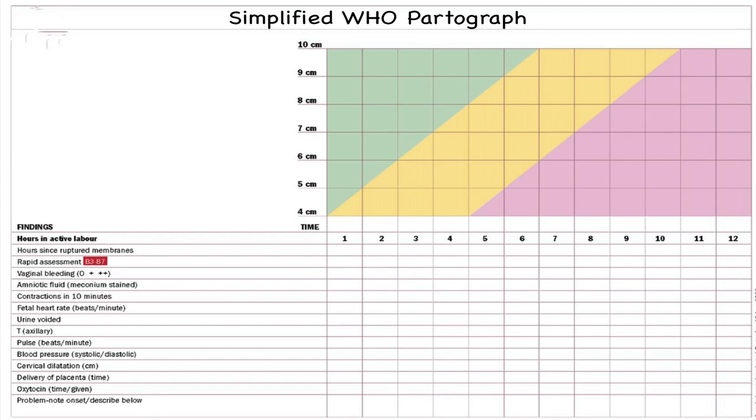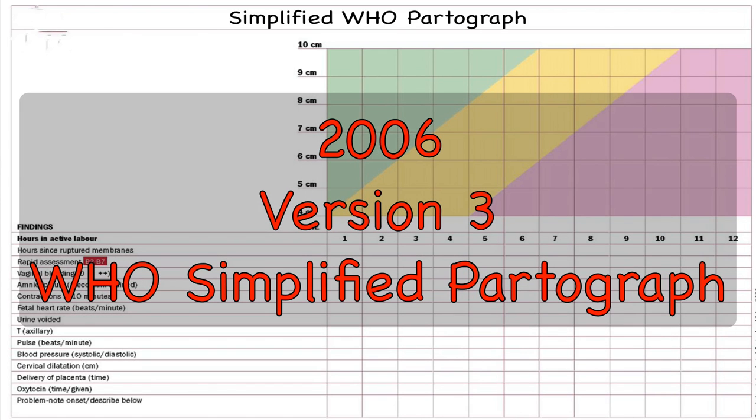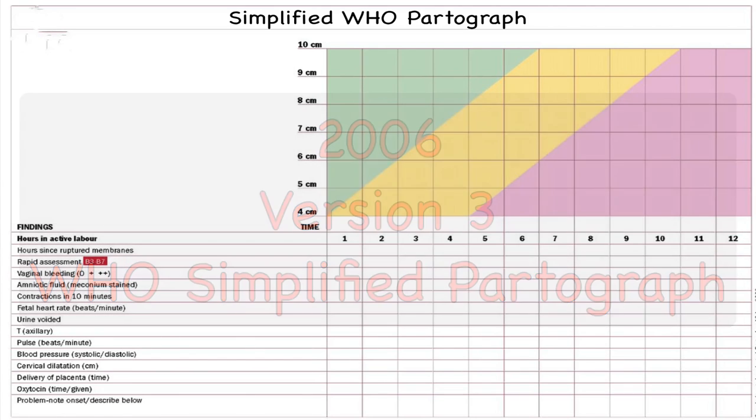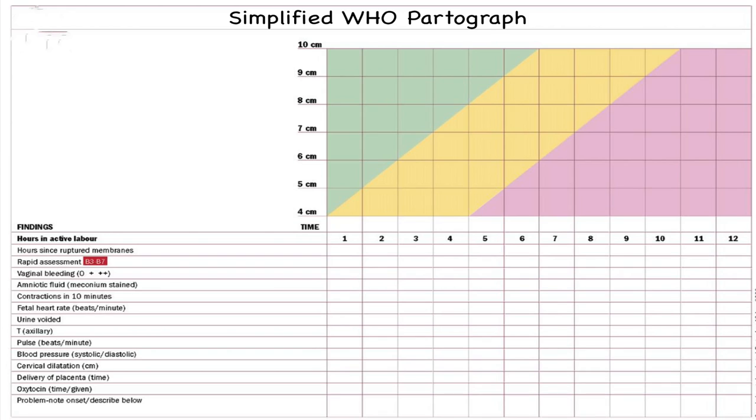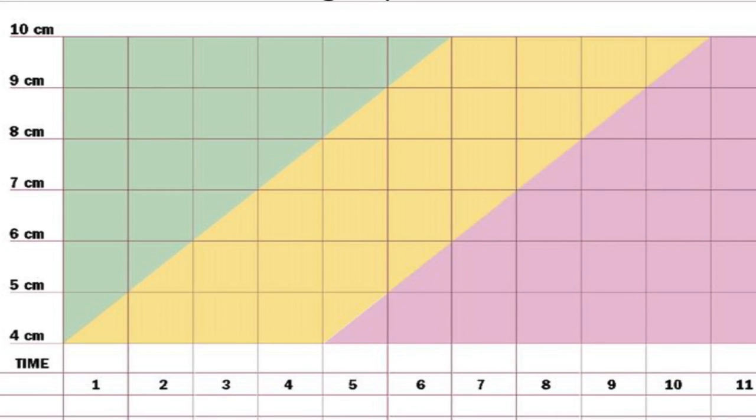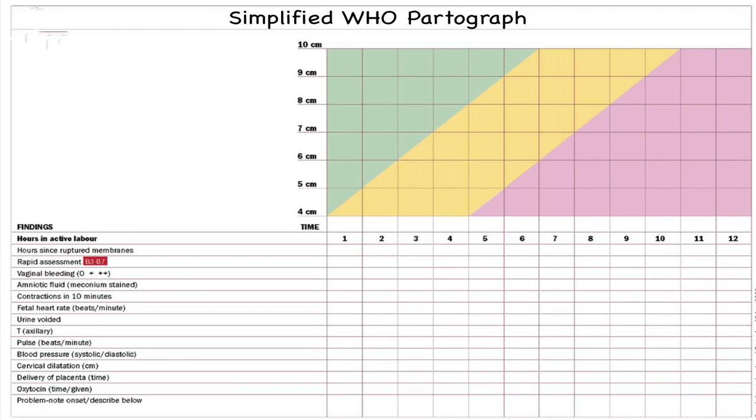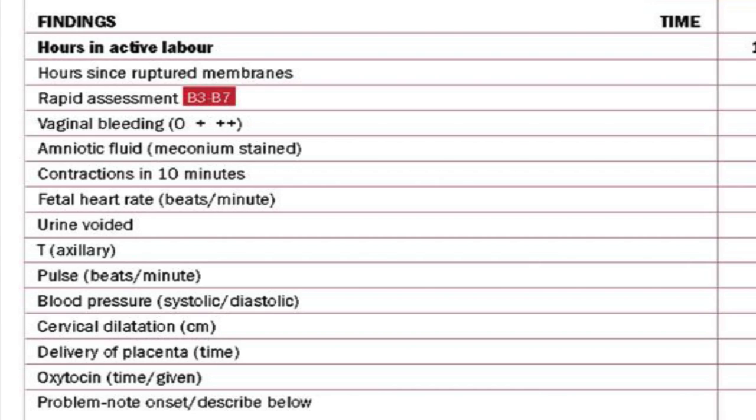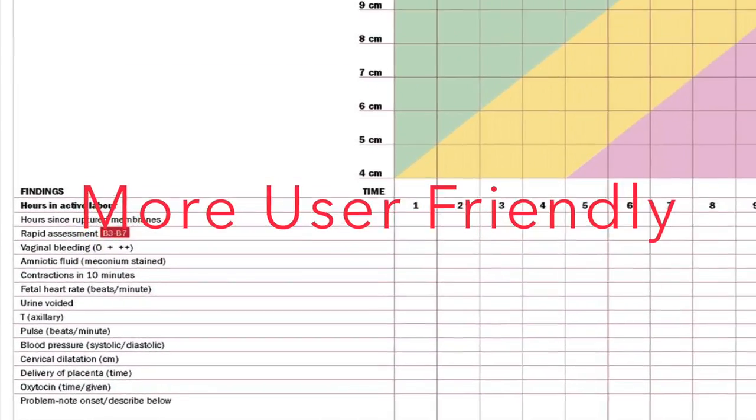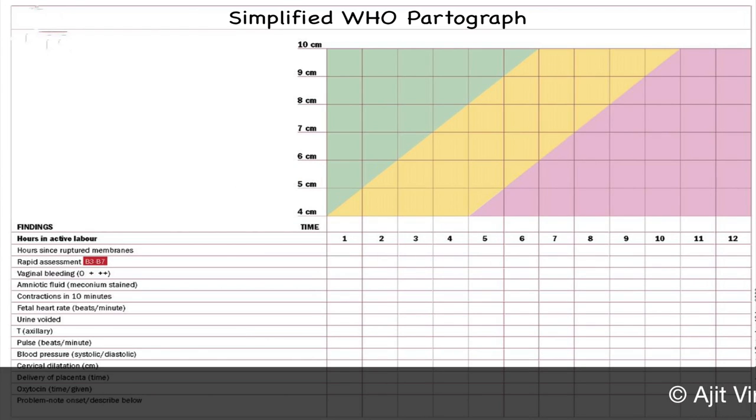WHO again modified the partograph for the third time in the year 2006, this time for use by skilled attendants in health centers. This simplified partograph is color coded. The area in between the alert and action line is colored amber indicating the need for greater vigilance. In version 3, cervical dilatation is recorded on the partograph but not descent of the head. Other indicators of maternal and fetal well-being are recorded below in the labor record. WHO simplified partograph is more user-friendly. Hence, the use of simplified partograph should be a routine practice in primary health centers and secondary hospitals while monitoring progress of labor for better maternal and perinatal outcomes.